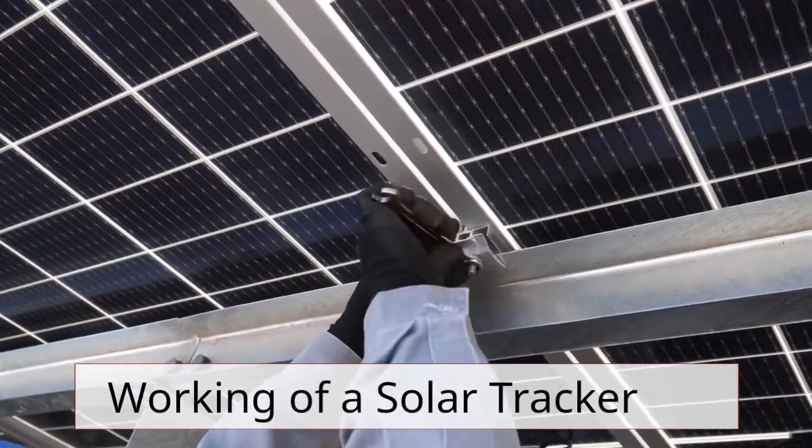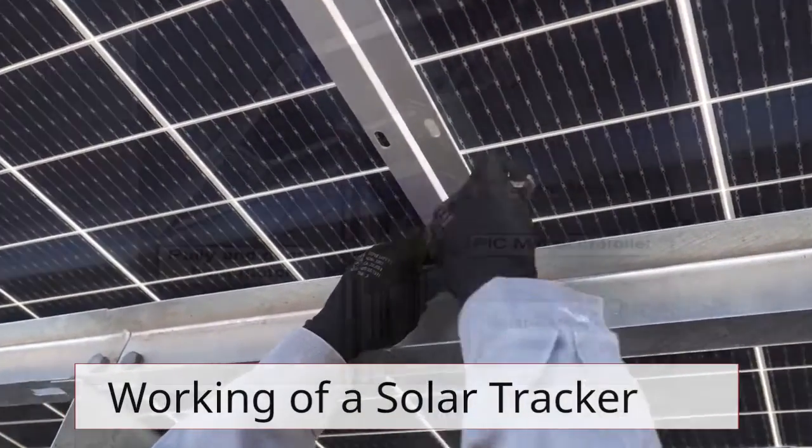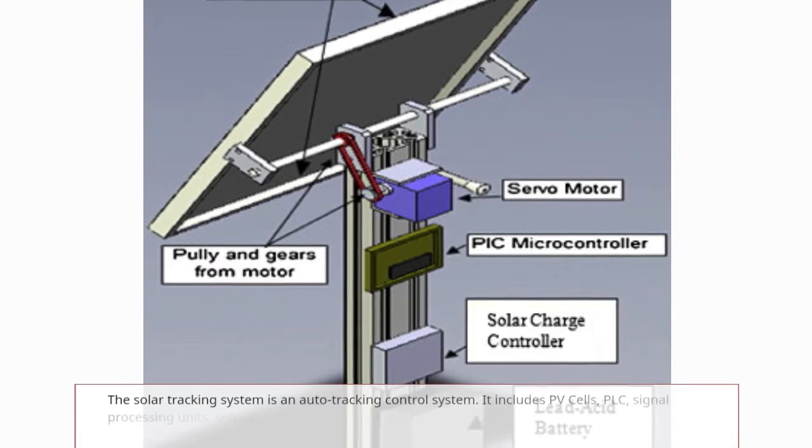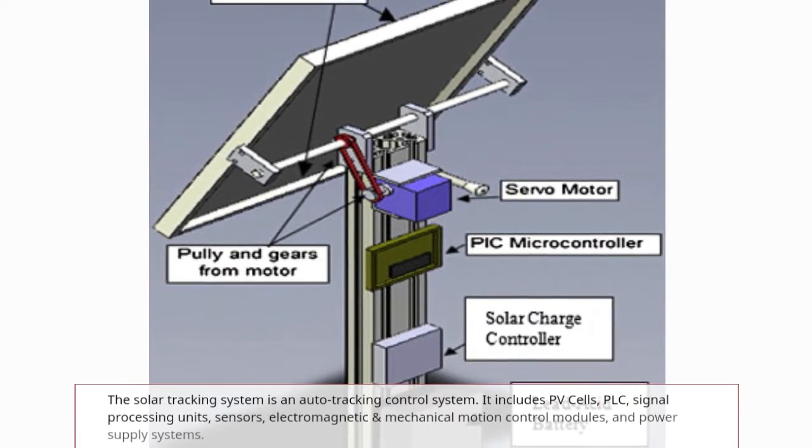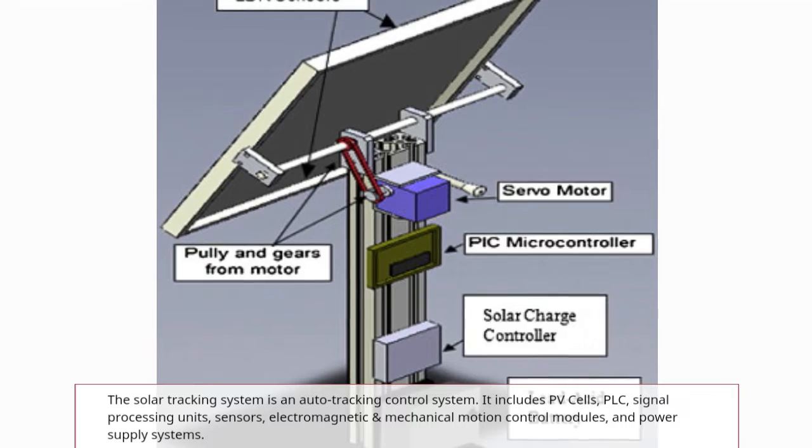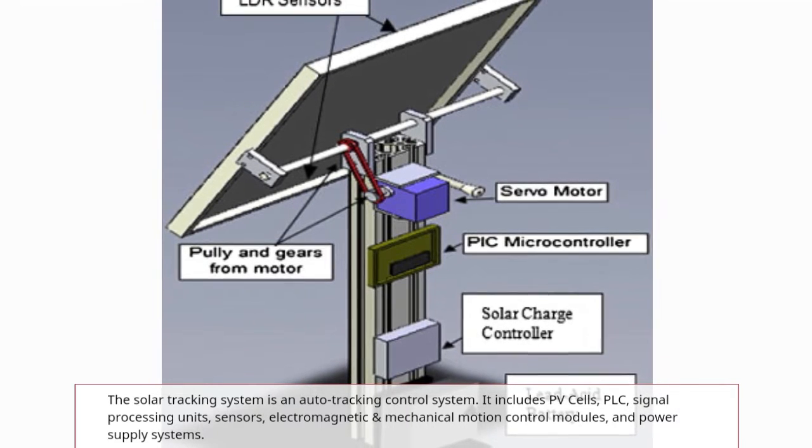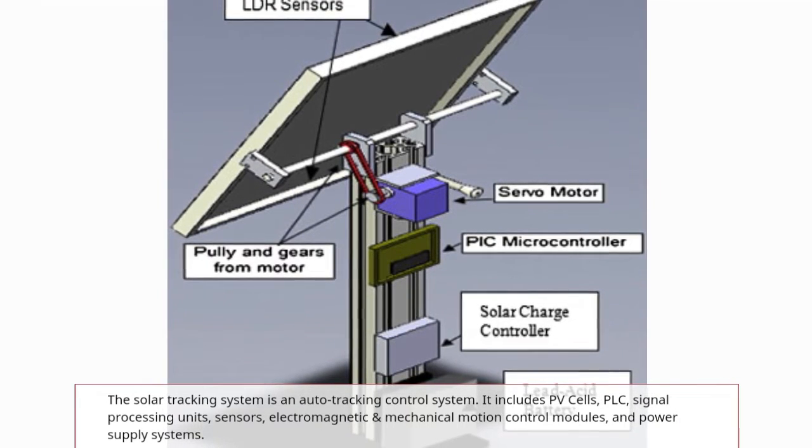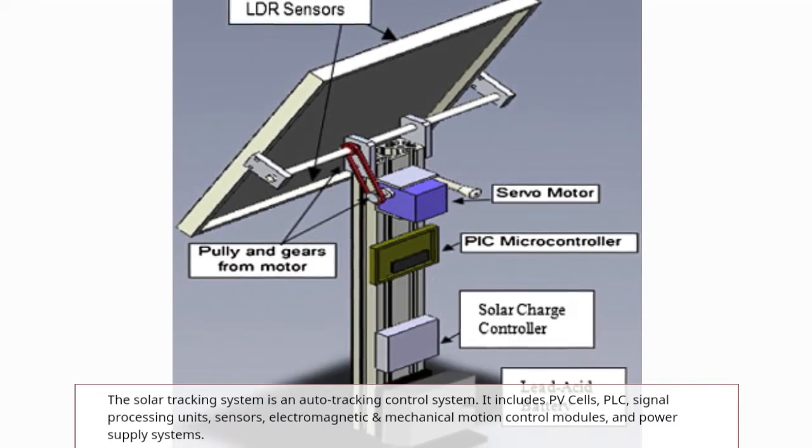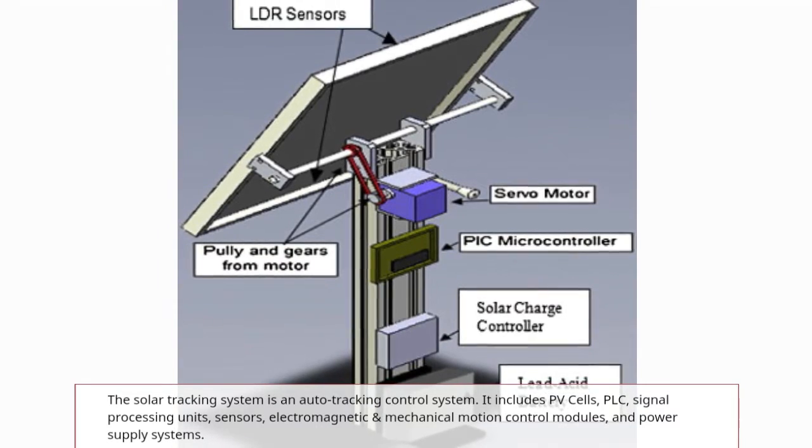Now we're going to be discussing how a solar tracking system works. The solar tracking system is an automatic tracking control system. It includes components like PV cells, PLC microcontrollers, signal processing units, sensors, electromagnetic and mechanical motion control modules and power supply systems like a battery.